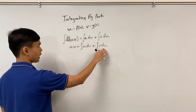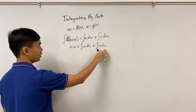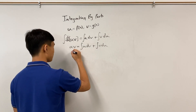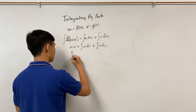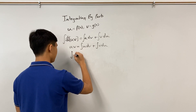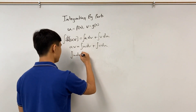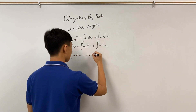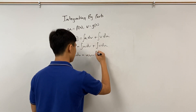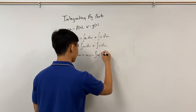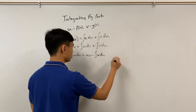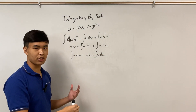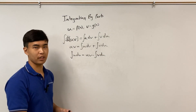When we subtract the integral of v du from both sides, we get the famous formula: the integral of u dv equals uv minus the integral of v du. This is the general integration by parts formula.